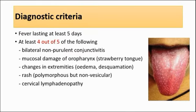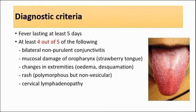This is the diagnostic criteria for Kawasaki disease. The child has to have fever lasting at least five days, and also at least four out of five of the following criteria: bilateral non-purulent conjunctivitis with red eyes, and mucosal damage of the oropharynx which includes strawberry tongue — very well known for Kawasaki disease. This picture shows the strawberry tongue with white spots. Other mucosal changes are injected pharynx, red lips, or dry and fissured lips.